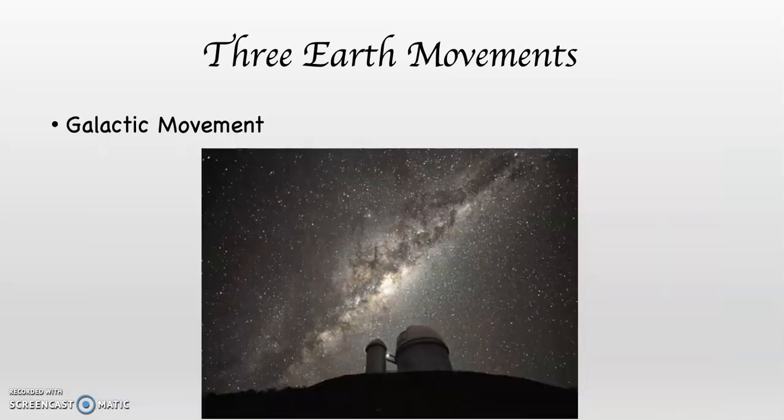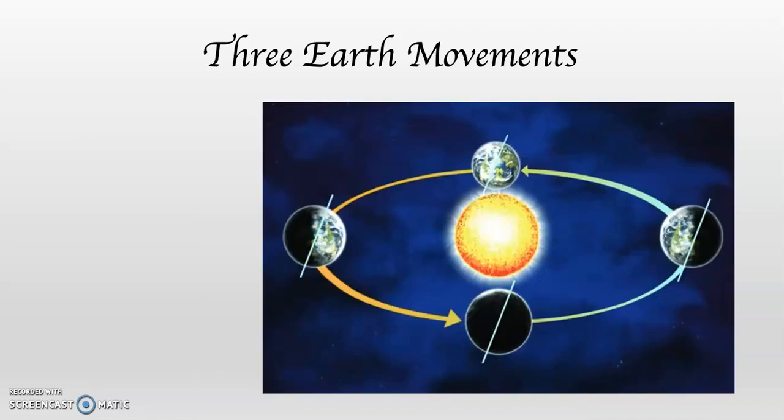So the first movement is galactic movement. The second movement is revolution. This is what we do around the sun. In Module 2, I'm going to speak much more about this, but for now what you need to know is that this is what gives us our 365 and a quarter day year.